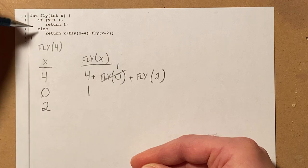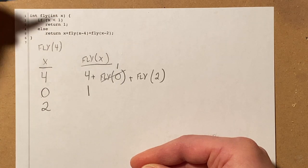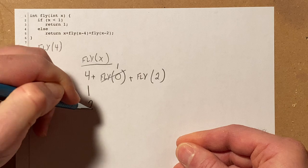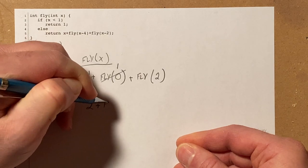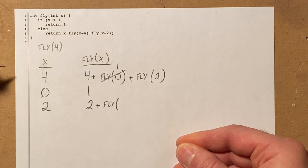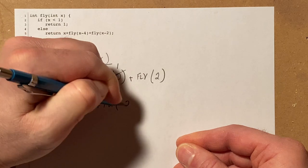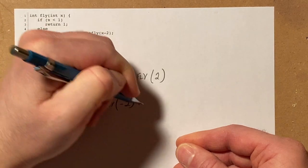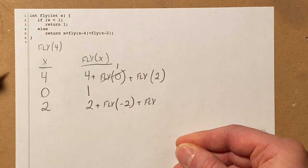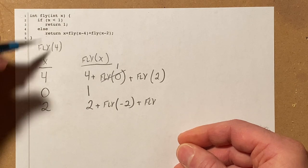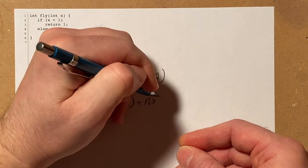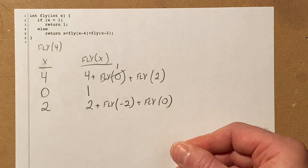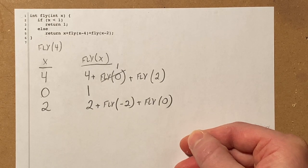When x is 2, if 2 is less than 1, that's false. So I'm going to return x, which is 2, plus fly of x minus 4. 2 minus 4 is negative 2. Plus fly of x minus 2. 2 minus 2 is 0. And then I can create a column for each one of these.